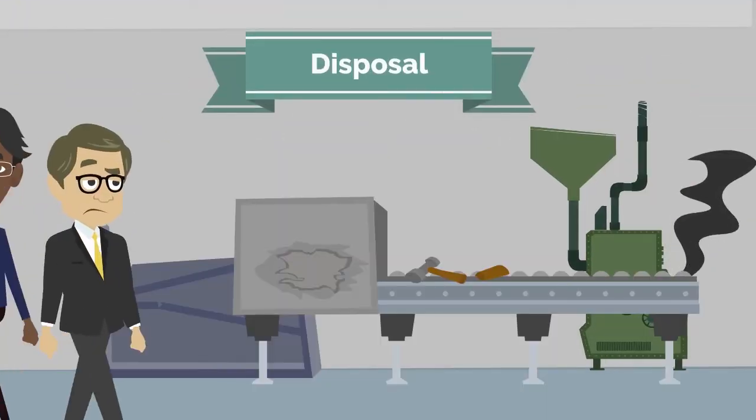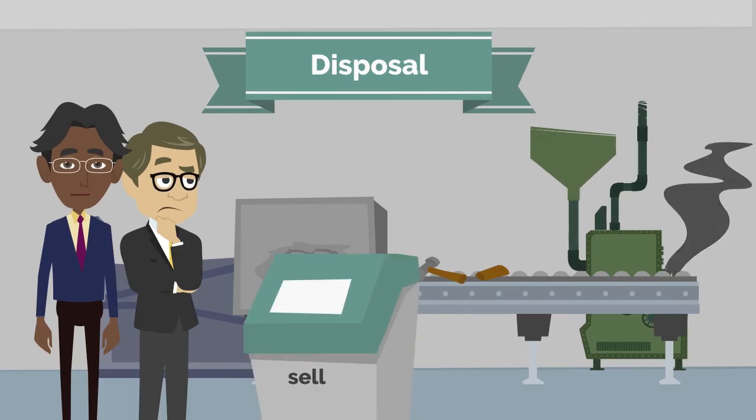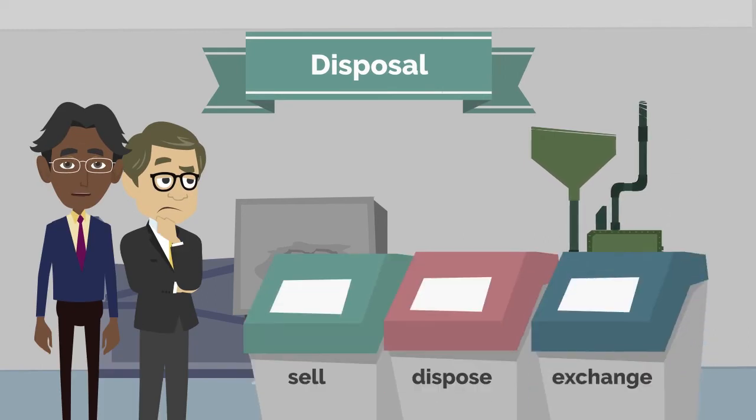At the end of an asset's useful life, a company can sell, dispose of, or exchange an asset. Journal entries will reflect both the removal of the asset and its associated accumulated depreciation.